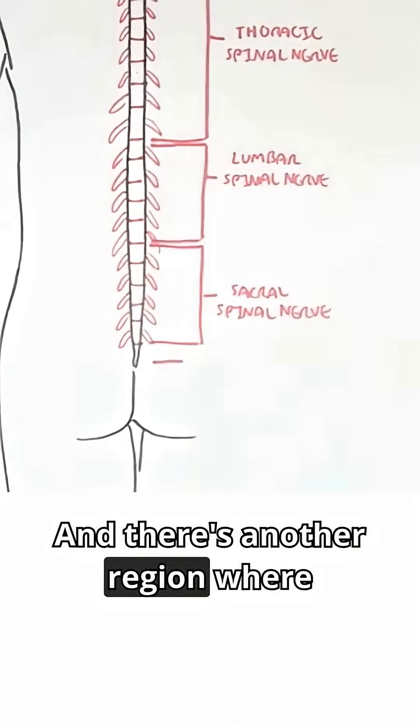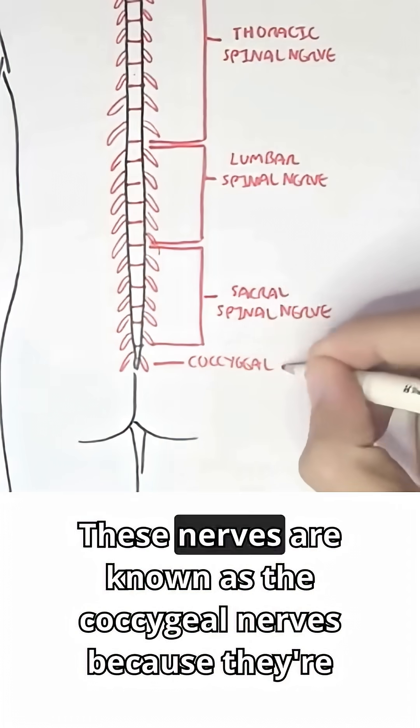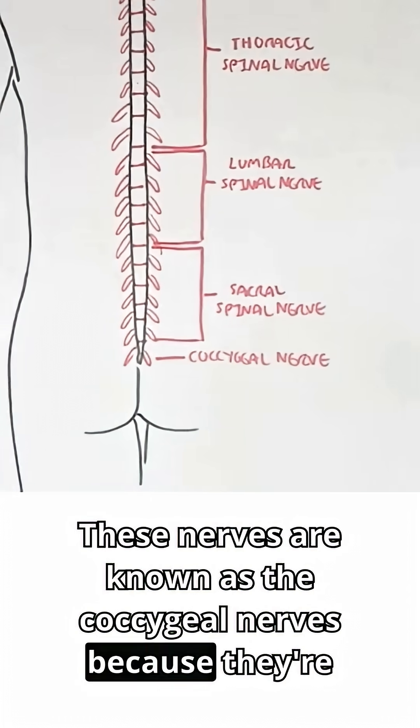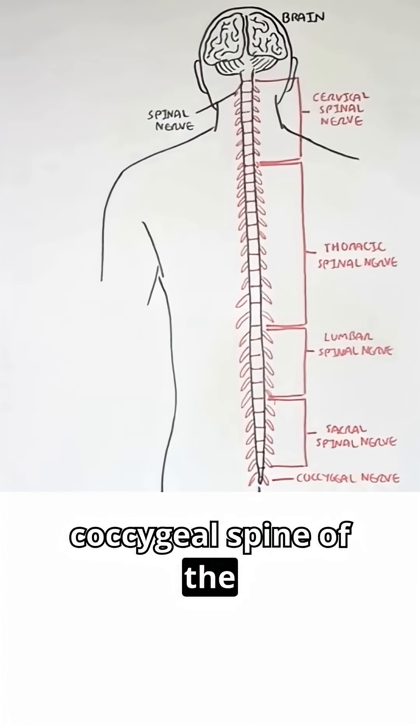And there's another region where we have one pair of spinal nerves. These nerves are known as the coccygeal nerves because they're close to the coccygeal spine.